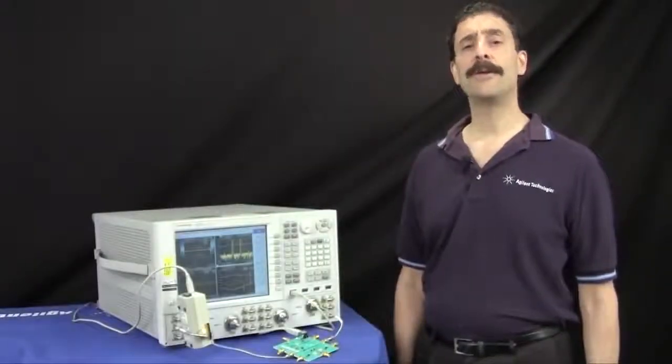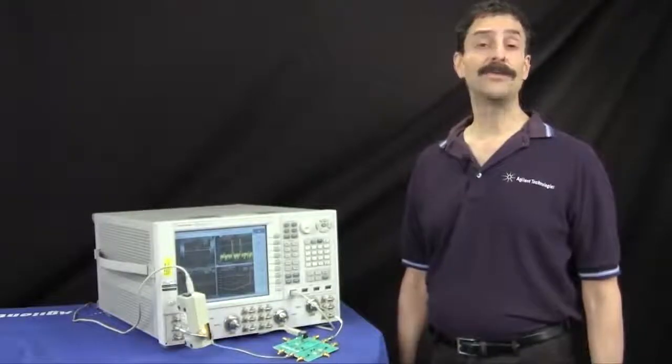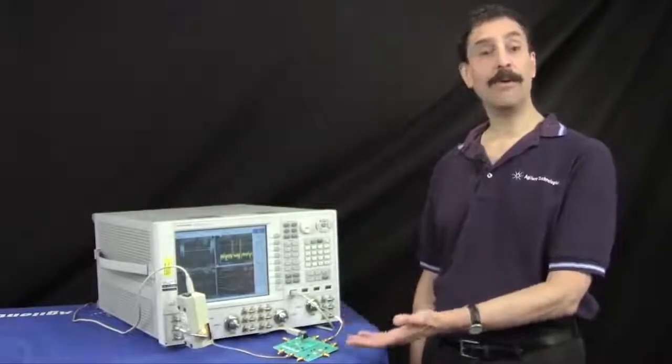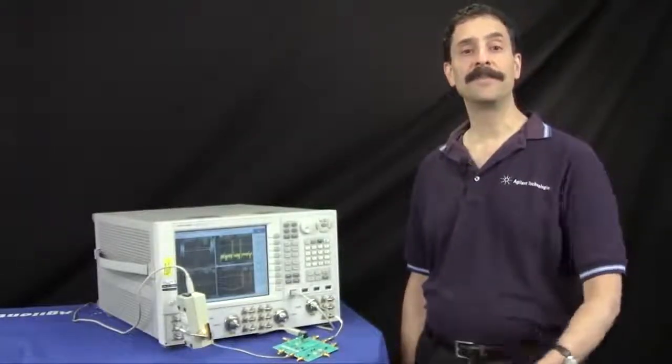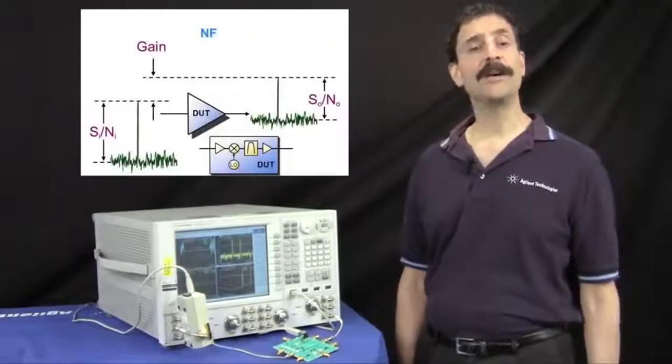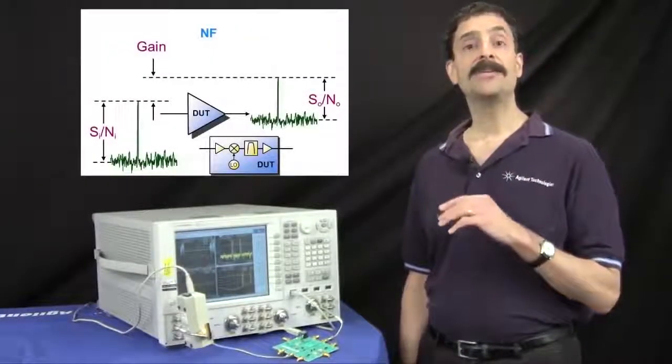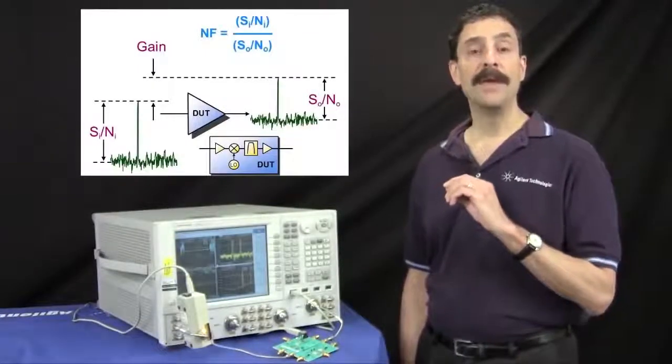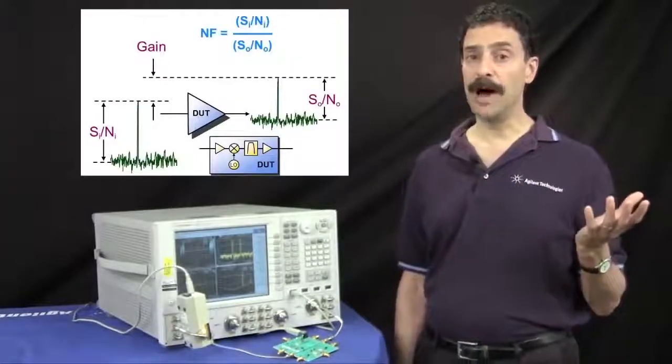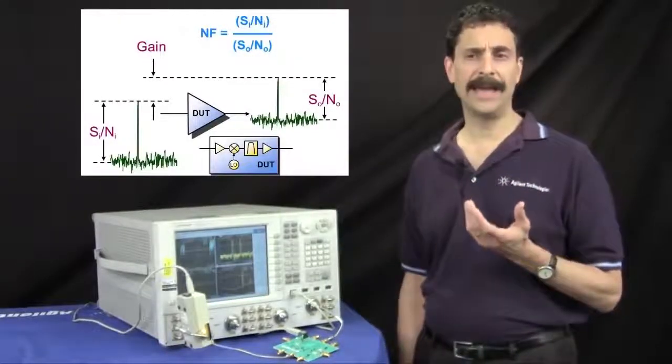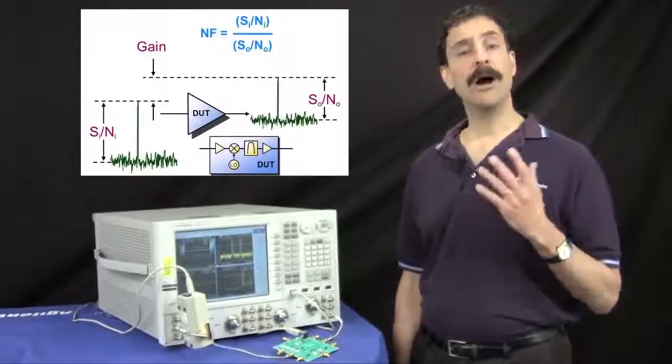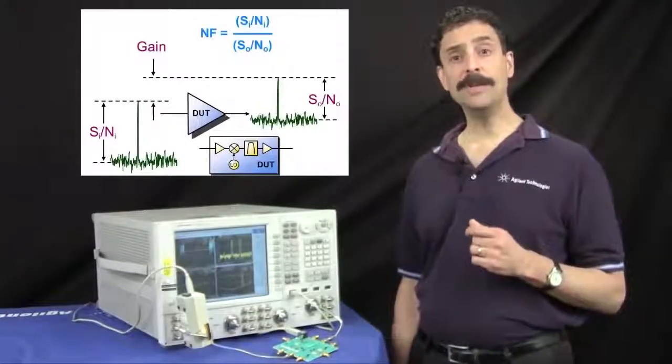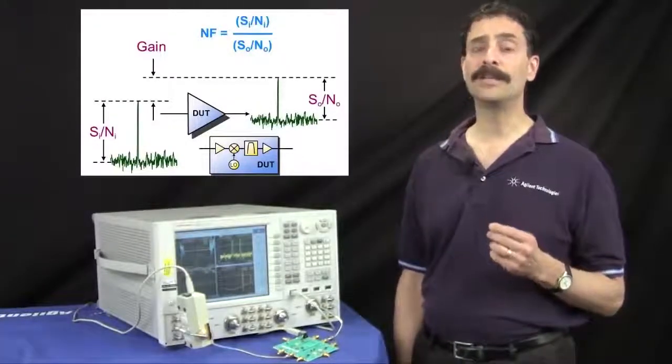So why do engineers care about noise figure? Noise figure is a handy figure of merit that describes the electrical noise added by an amplifier or frequency converter in a 50 ohm system. The definition of noise figure is simple and intuitive. It's the ratio of the input signal-to-noise ratio to the output signal-to-noise ratio. For any passive device with loss or active device with loss or gain, the output signal-to-noise ratio will always be less than that at the input. This means the noise figure will always be larger than 1 in linear terms or greater than 0 dB.